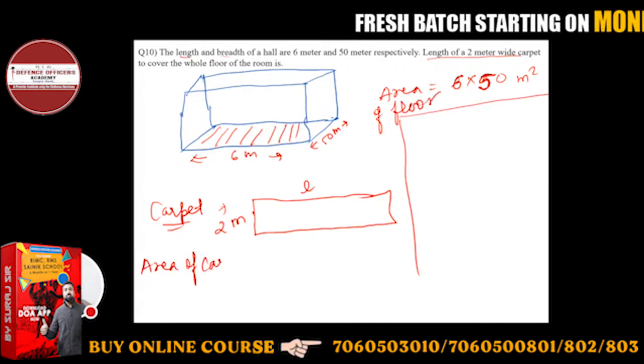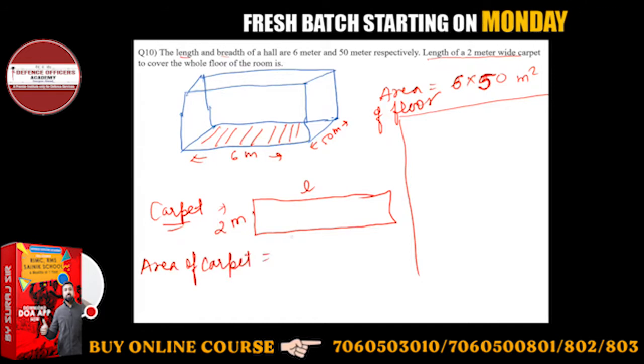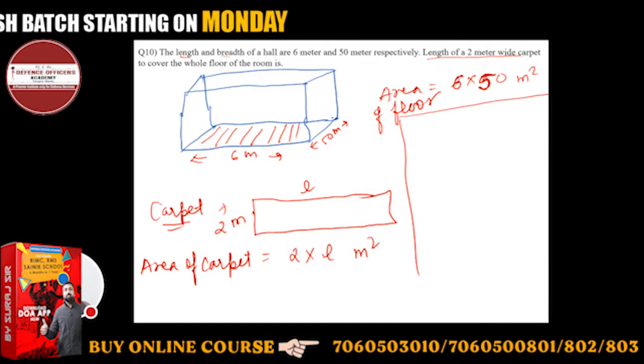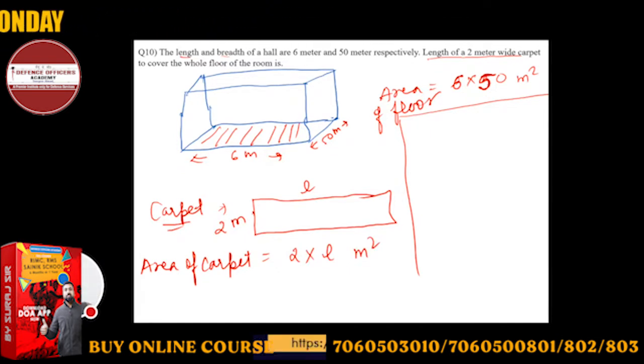Length you don't know. Area of carpet will be 2 into L meter square. You should know this: the area of carpet which is required to cover the whole floor will be nothing but the area of floor.